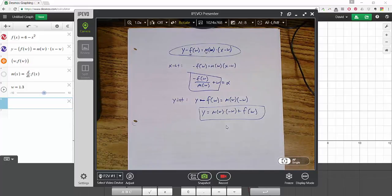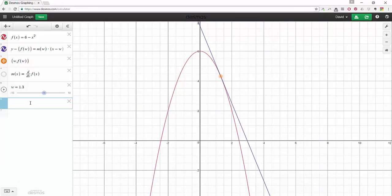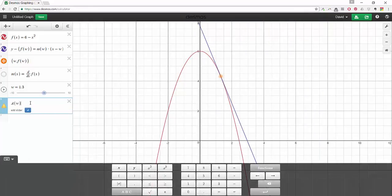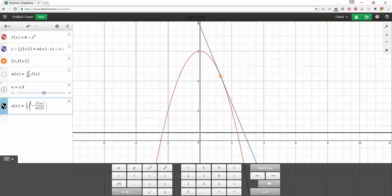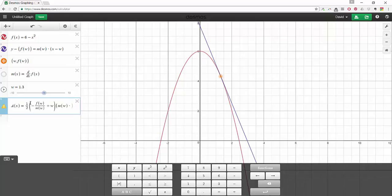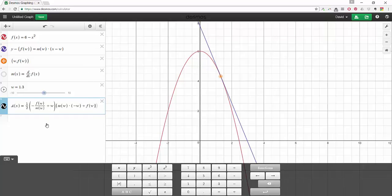So let's go ahead and now write an area equation in Desmos that's based on the function and its derivative in sort of the most general form here. So I'll call my function a for area. Well, I'm going to make x my variable. And it was, let's see, what was it? It was 1 half times the base. And the base was negative f of w over m of w plus w times the height. And the height was m of w times negative w plus f of w. Oh, except I made x my variable. Shoot. Okay, let's make w my variable.